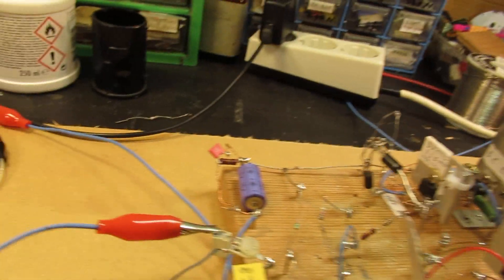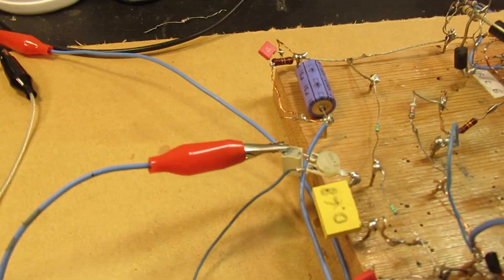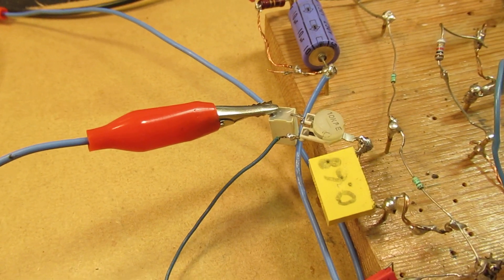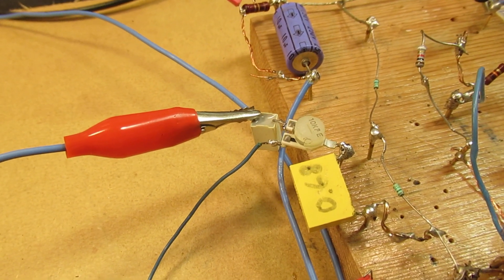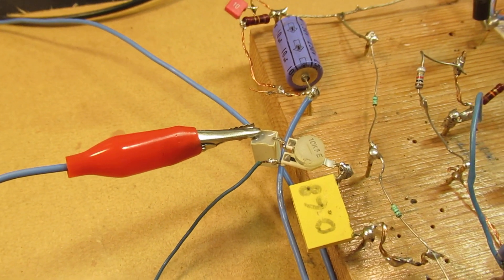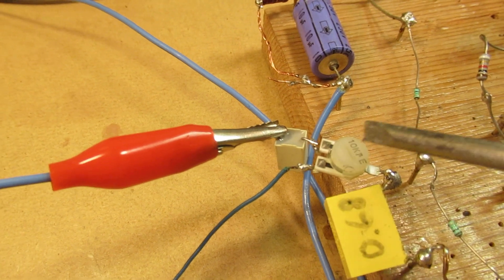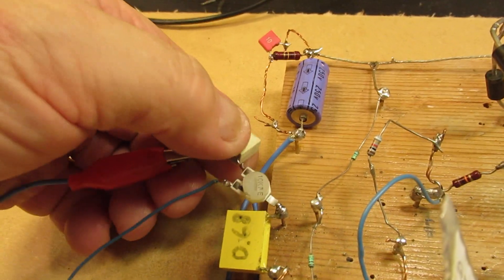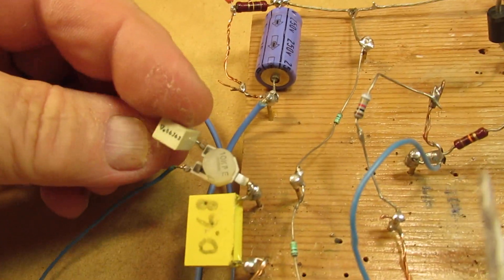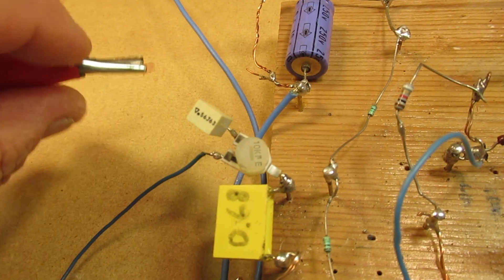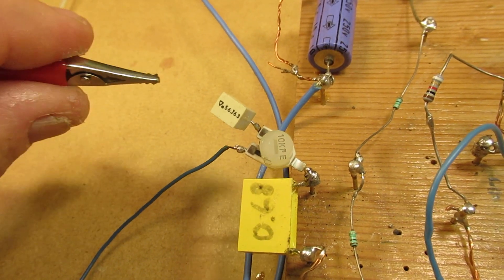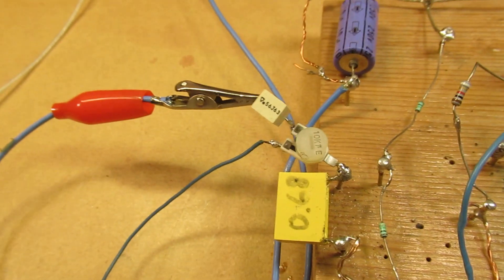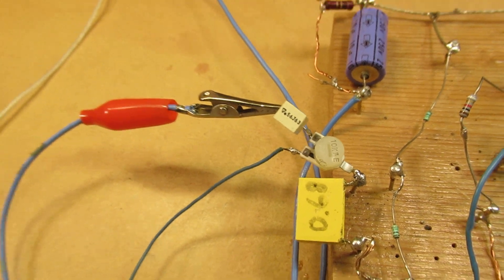That was more or less all to tell. The input capacitor is 0.68 microfarad, that is 680 nanofarad. Then it goes to the wiper of a 10k potentiometer here. And then it goes to the music source via a capacitor of 560 nanofarad. That is 0.56 microfarad.